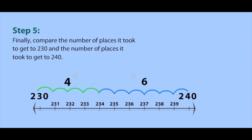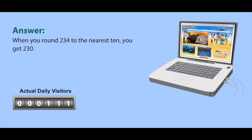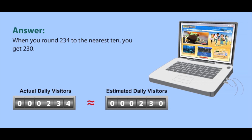Let's compare. Since four is less than six, 234 is closer to 230 than it is to 240. Now Zoe has her answer. When you round 234 to the nearest ten, you get 230. About 230 people visit the Study Jam site every day. Nice!